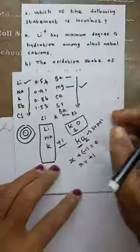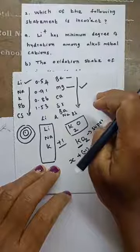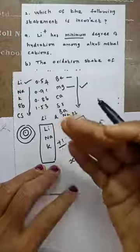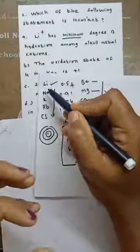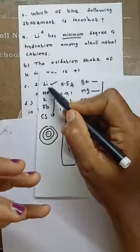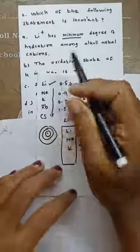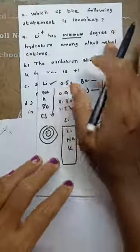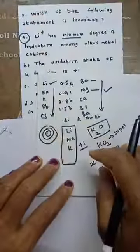Now take option A: Li+ has minimum hydration among alkali metal cations. Note the word 'minimum.' Lithium is the first element and has a very small atomic size, so it has more hydration energy than the rest. Therefore this statement is incorrect. The answer for question 2 is option A.